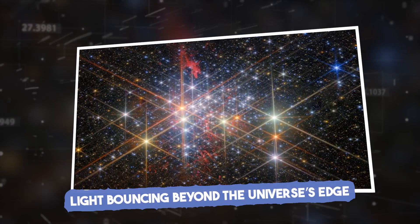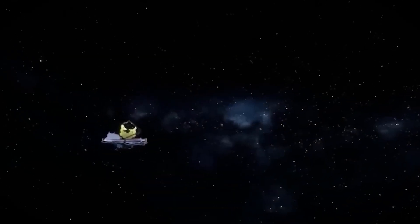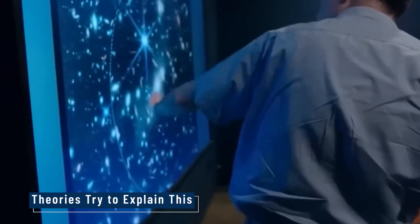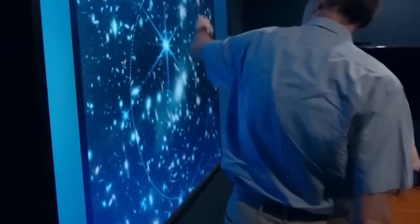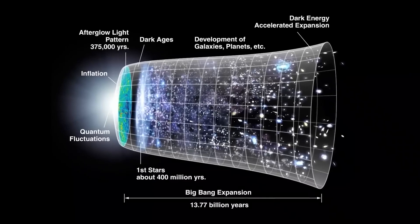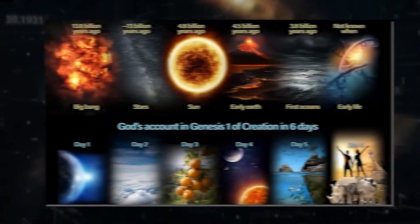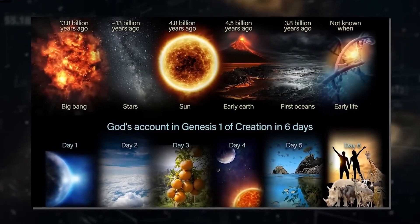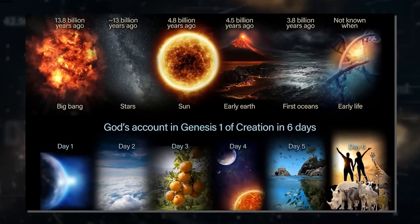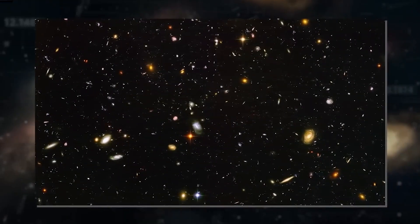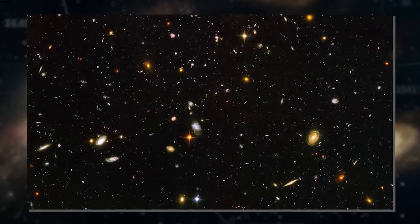Webb's instruments have detected light signatures that fade only to reappear later, a cosmic echo defying expectations. Two main theories try to explain this: one suggests light is circling a finite, closed universe, traveling vast distances before returning. The other proposes it's reflecting off a boundary or interface with another universe, some kind of cosmic mirror or barrier beyond our own.